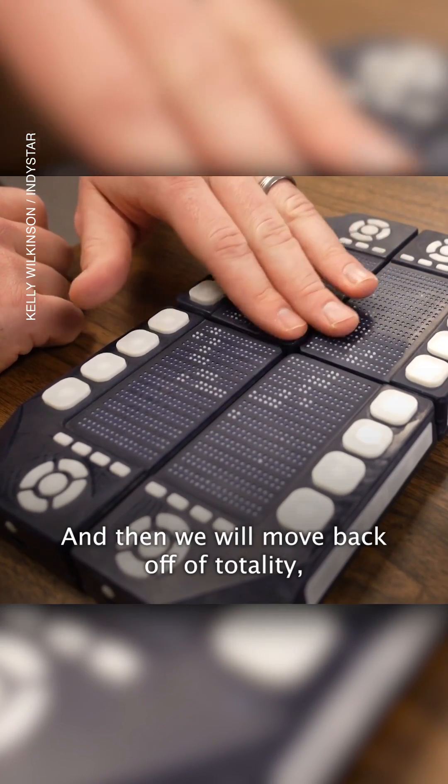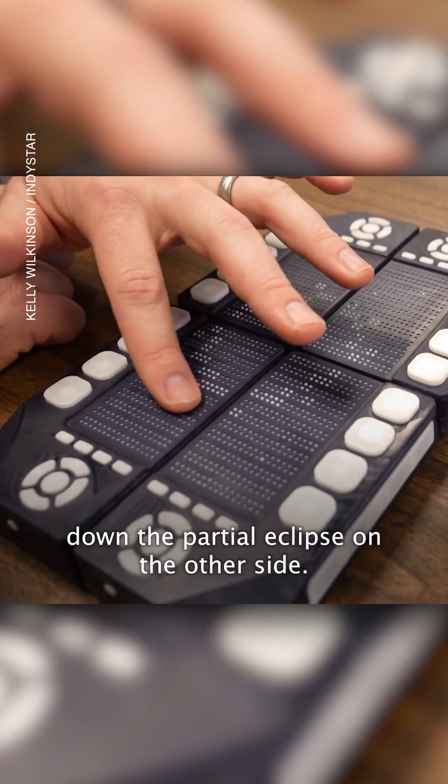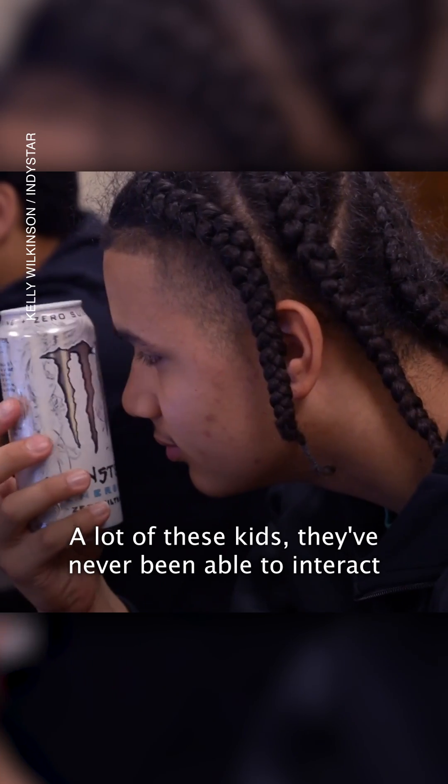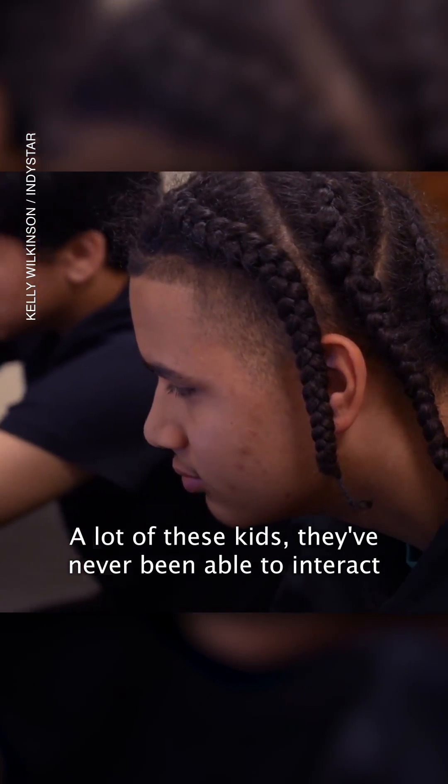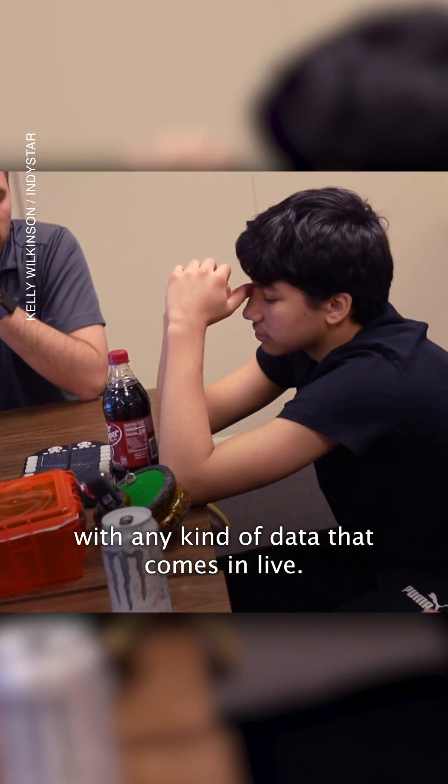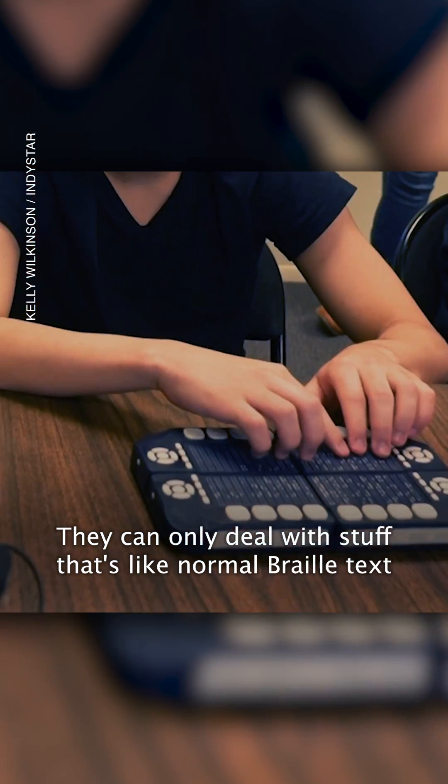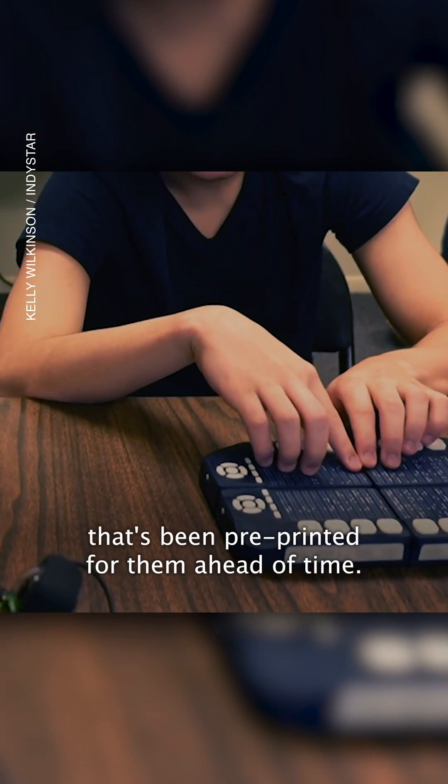And then we will move back off of totality down the partial eclipse on the other side. A lot of these kids, they've never been able to interact with any kind of data that comes in live. They can only do stuff that's like normal Braille text that's been pre-printed for them ahead of time.